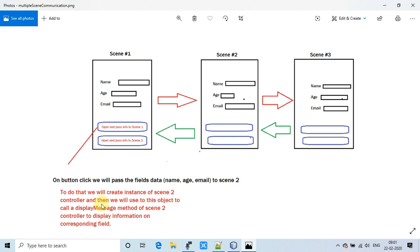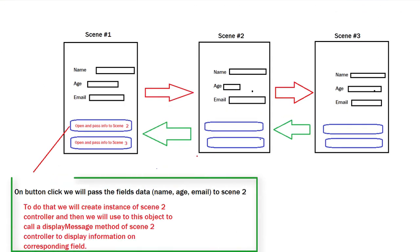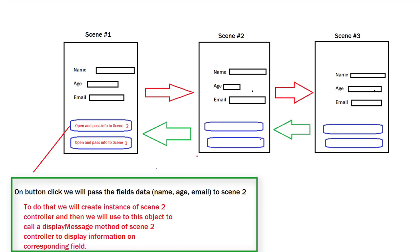To do that, we have to create an instance of the scene 2 controller class, which we will use to load that stage. We will also call the display message method — a custom method to display all the information we are getting from scene 1.